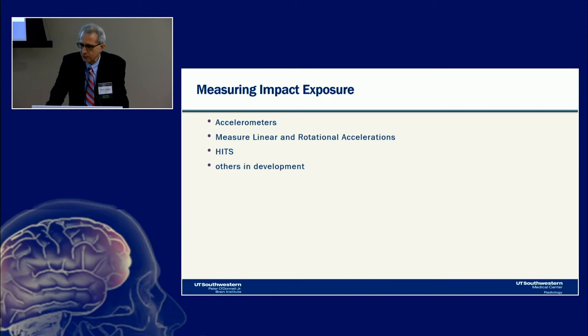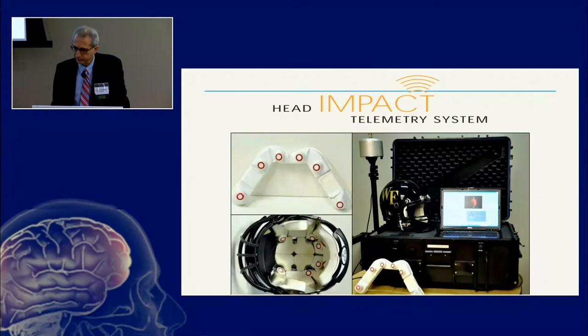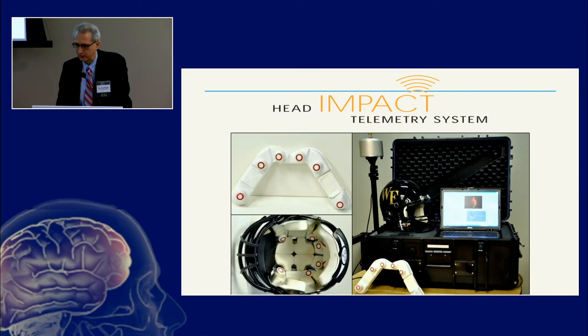Head impact exposure is typically measured using accelerometers, which provide measures of both linear and rotational acceleration. The HIT system — Head Impact Telemetry System — uses accelerometers embedded within the foam padding of the helmet without affecting helmet integrity. These are NCAA-approved. A wireless base unit on the sideline acquires data wirelessly from each player's helmet during all games and practices.